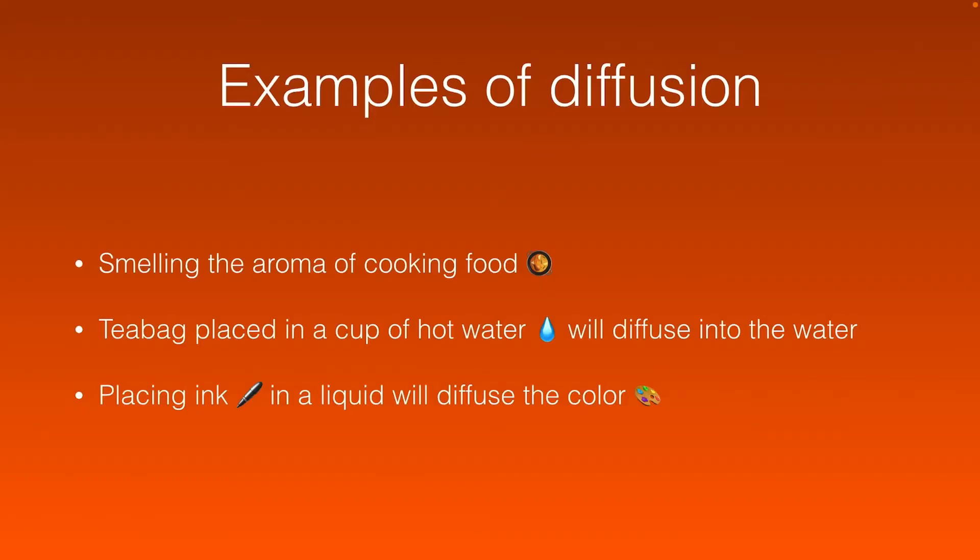And here are the three examples of diffusion: smelling the aroma of cooking foods, a tea bag placed in a cup of hot water will diffuse into water, and placing ink in a liquid will also diffuse the color. Like when you place any ink or any substances in the water, it's going to diffuse.